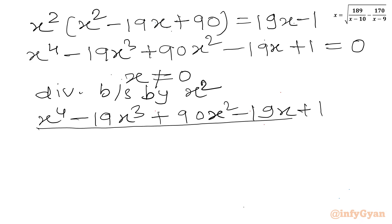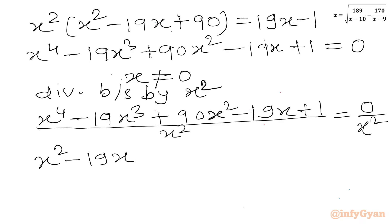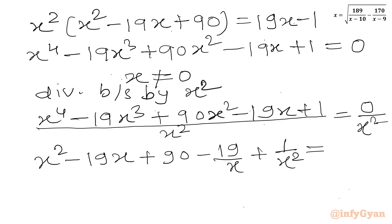Now I can see x cannot be 0 for this equation, so I can divide both sides by x². We get x² minus 19x plus 90 minus 19 over x plus 1 over x² equal to 0.